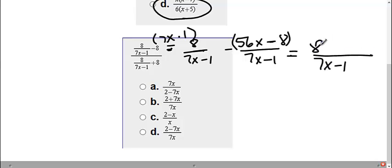Now that I have a common denominator, I can combine it to make one fraction. So I get 8. Now we need to remember to distribute that minus 56x plus 8. So really I have 8 and 8, I get 16. I still have minus 56x all over 7x minus 1. So that's my top.